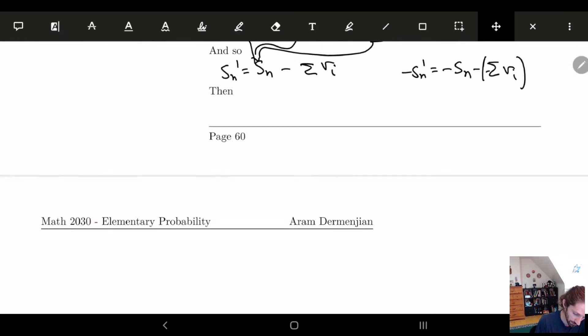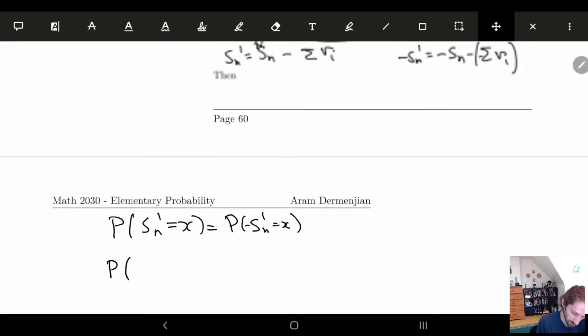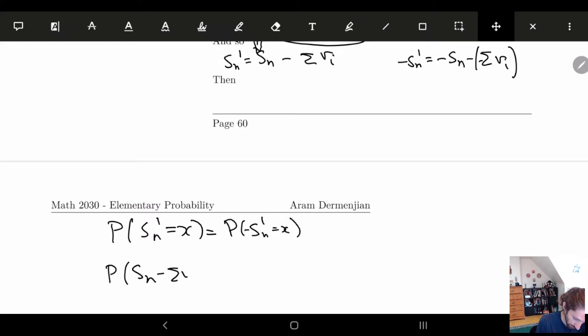So what we have is, if I look at the probability that sn prime, that this is going to have the same distribution, so if I make these equal to one another, and I plug in these numbers, so I say, okay, this means if I say sn prime, this we said was equal to sn minus sum of vi is equal to x. And here we have minus sn plus the sum of the vi is equal to x, right?